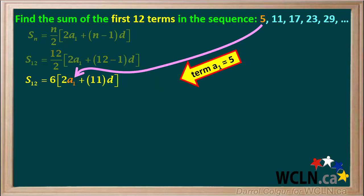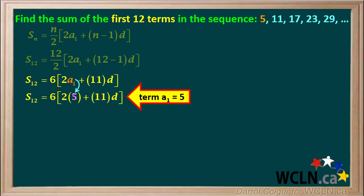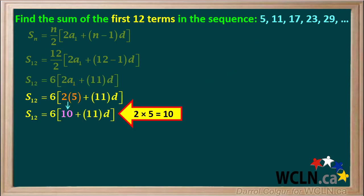The first term in the sequence, a1, is equal to 5. So we'll substitute 5 for a1 in this equation. 2 times 5 is equal to 10. So we'll substitute 10 for 2 times 5 in the equation here.